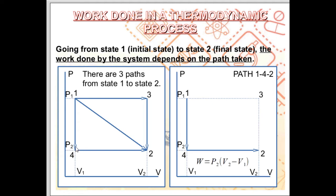There is path 1→4→2, path 1→3→2, and the direct path 1→2. The work done by the system will depend on the path taken. For path 1→4→2, the system goes from state 1 to state 4 and then to final state 2. From state 1 to state 4, the volume is constant at V1 — no volume change, which means no work done, even if the pressure is not zero.